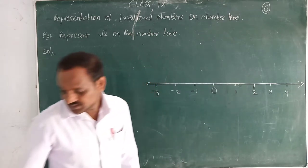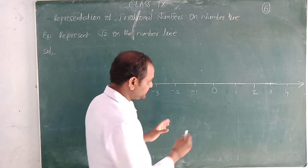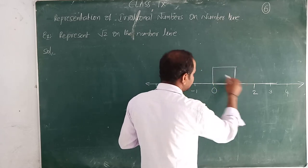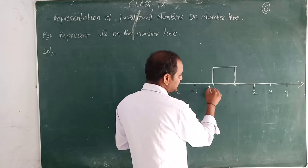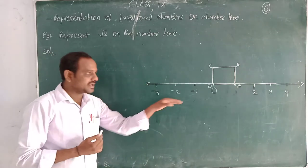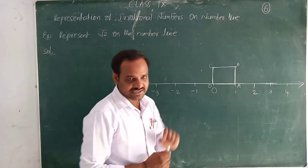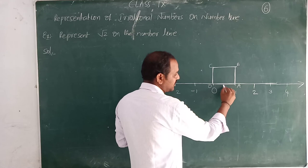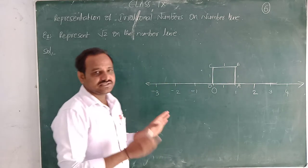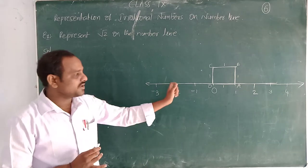We have clarity: root 2 lies between 1 and 2. How to represent it? First we have to draw a square of 1 unit — a square OABC on the number line. OA is 1 unit, AB is 1 unit, BC is 1 unit, CO is 1 unit. So OABC is a 1-unit square. First we have to draw square OABC.